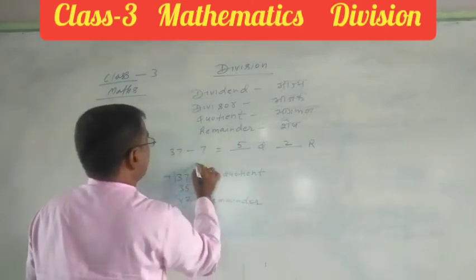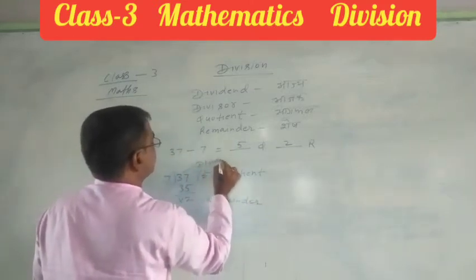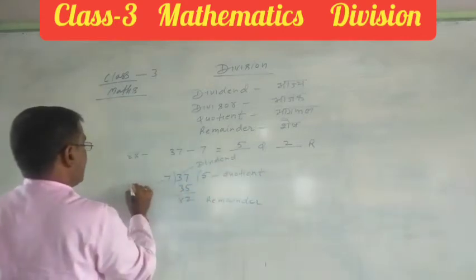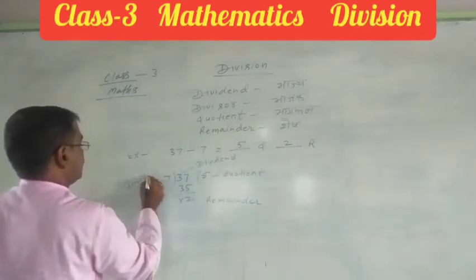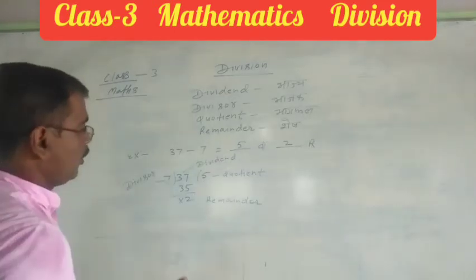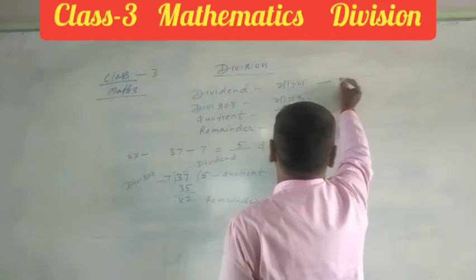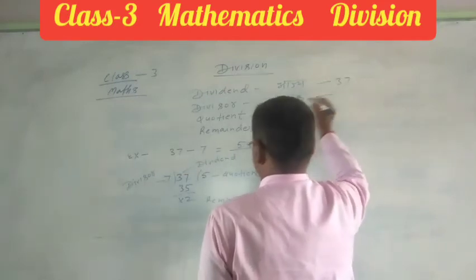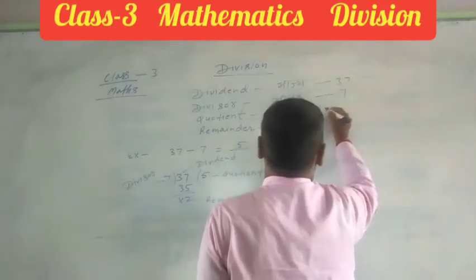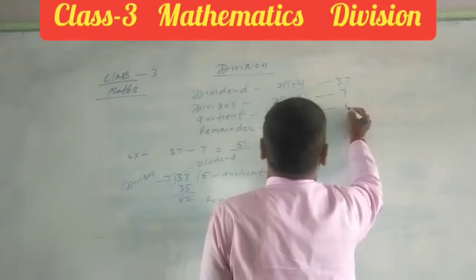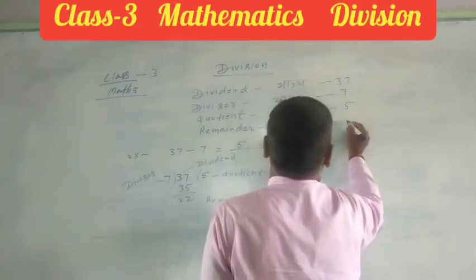It is divisor. 7 is divisor. Here you also, in this way, you write here, the dividend is 37, divisor is 7, quotient is 5, and remainder is 2.